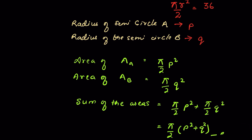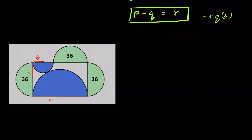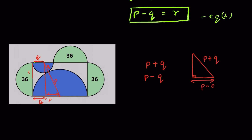Now recall the original concept: when two circles touch each other externally, the line joining the centers of the two circles passes through a common point. So if one radius is Q and the other is P, then this length will be P plus Q. Let's drop a perpendicular here. Since this side is Q, this is also Q, so this length will be P minus Q. Now here we have a right-angle triangle. The hypotenuse is P plus Q, the base is P minus Q, and since the radius here is R, this length is 2R.